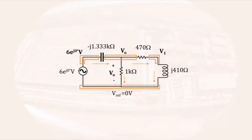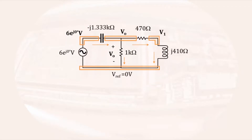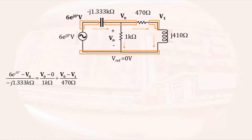The analysis of the circuit then proceeds exactly as if it consisted entirely of resistors. Looking at the center node, we have the current through the capacitor entering the node. This is written as the voltage of the tail of the current arrow minus the voltage at the head of the current arrow, divided by the impedance the current is going through. The remaining two currents of this node leave: the current through the 1 kilo ohm resistor, which is the voltage at the center node minus the voltage at the reference node (0 volts) divided by 1 kilo ohm, and the current through the 470 ohm resistor, which is the voltage at the center node minus the voltage at the right-hand node divided by 470 ohms.